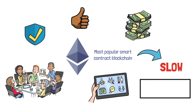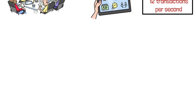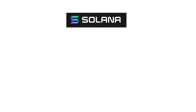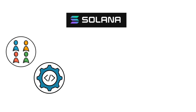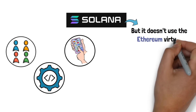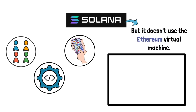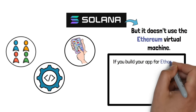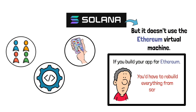Ethereum processes roughly 12 transactions per second. On the other hand, there's Solana. It's fast — over a hundred times faster than Ethereum — and it's bringing in new users, new developers, and new kinds of apps. But it doesn't use the Ethereum Virtual Machine. That means it's a totally different system. If you build your app for Ethereum, it doesn't work on Solana. You'd have to rebuild everything from scratch.